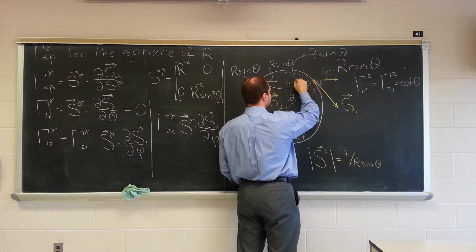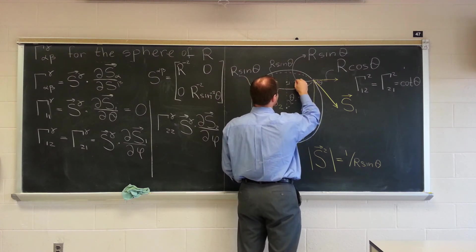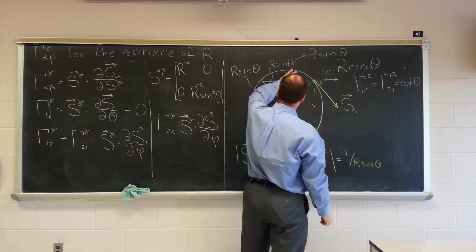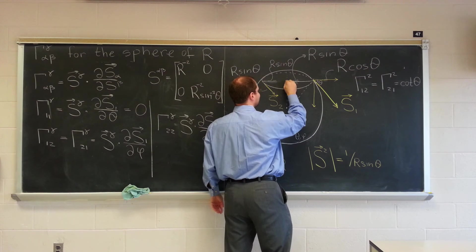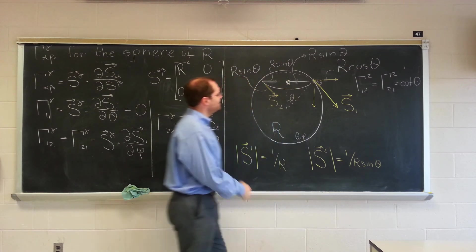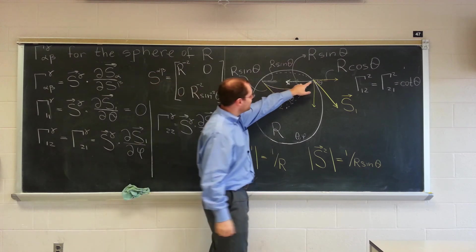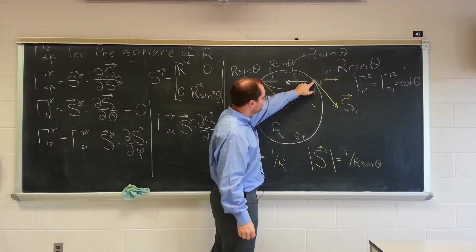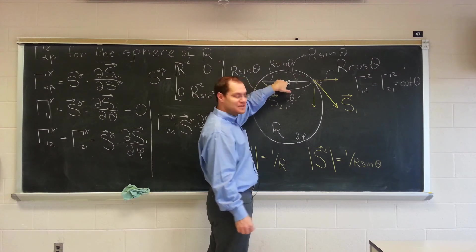Here that derivative will look like this, and its length is R sine theta. Actually, that means that it's this length. Isn't that perfect? R sine theta. So this vector right here is ds2, d phi. It's hard to believe that it's so perfect.